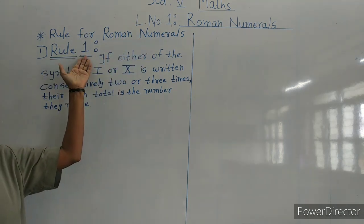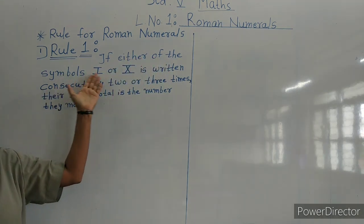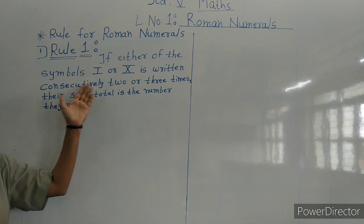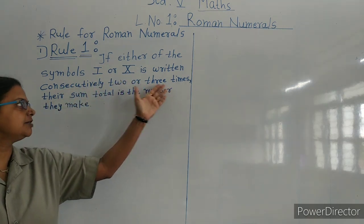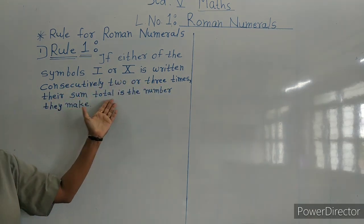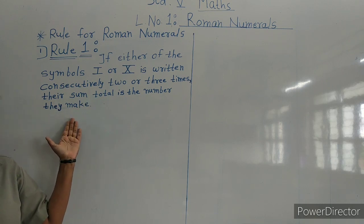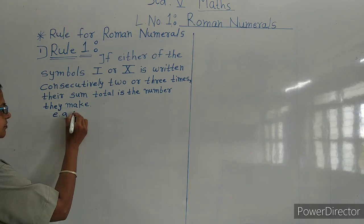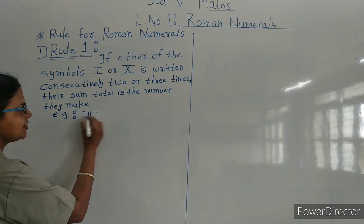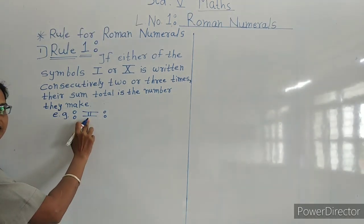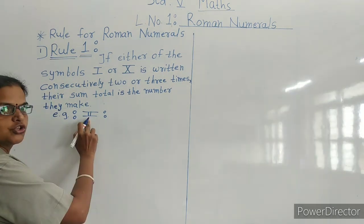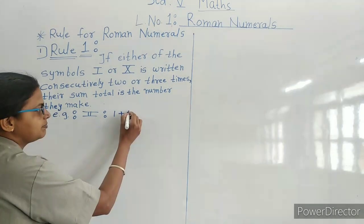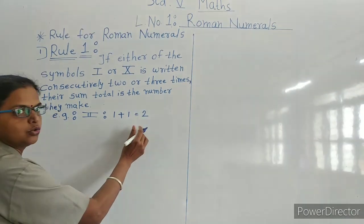Rule 1: If either of the symbols I or X is written consecutively two or three times, their sum total is the number they make. For example, double I: I is the symbol used for 1, so 1 plus 1 is equal to 2.